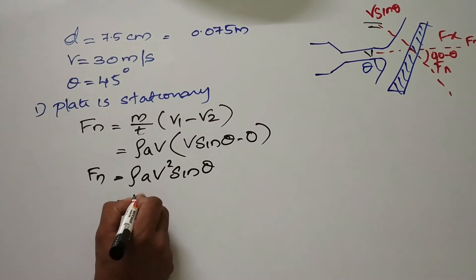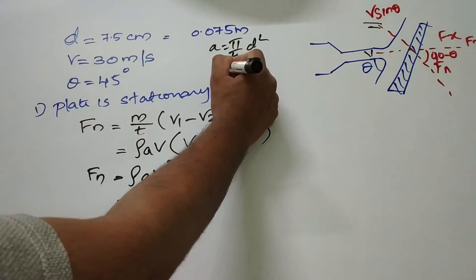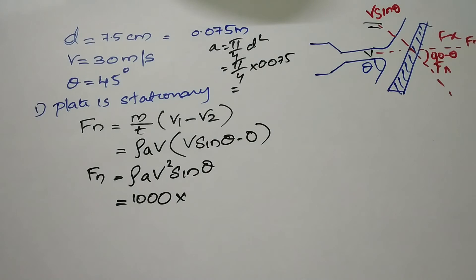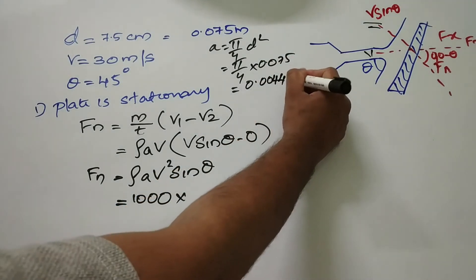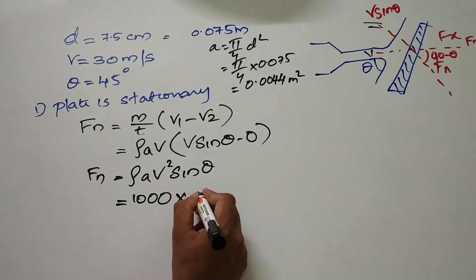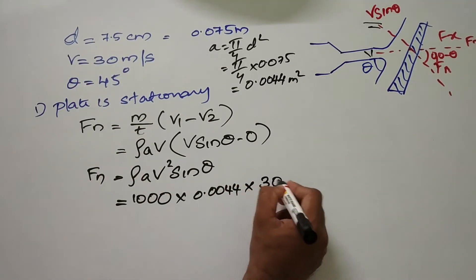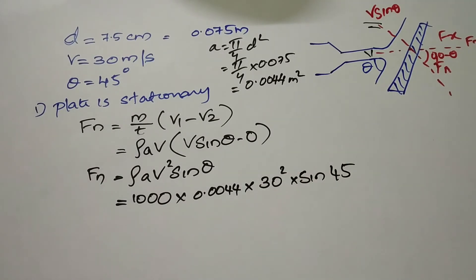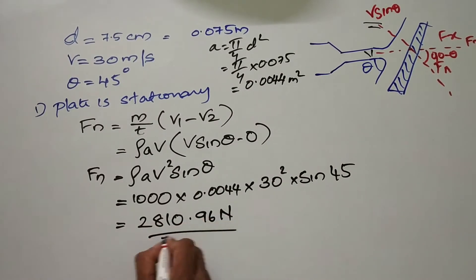So F of N is equal to rho A V squared sin theta. Substituting the values: area A equals 0.0044 m², velocity V equals 30 m/s, sin 45 degrees. So F of N comes out to 2810.96 Newtons.